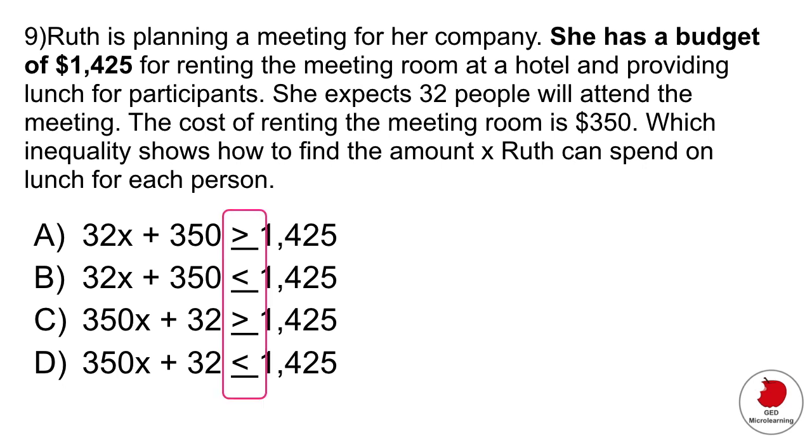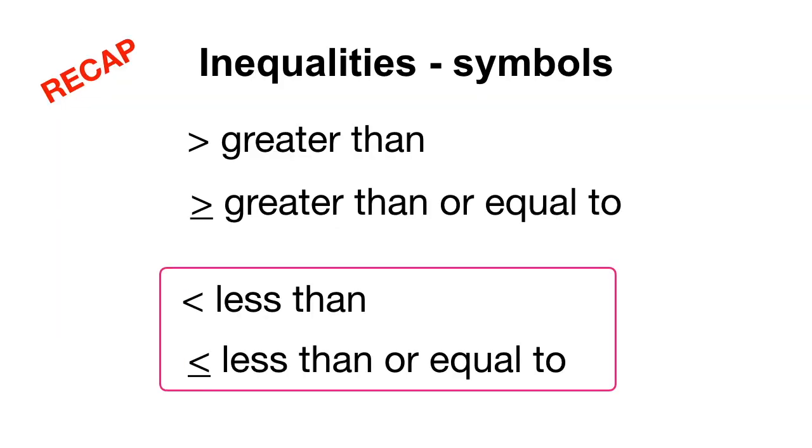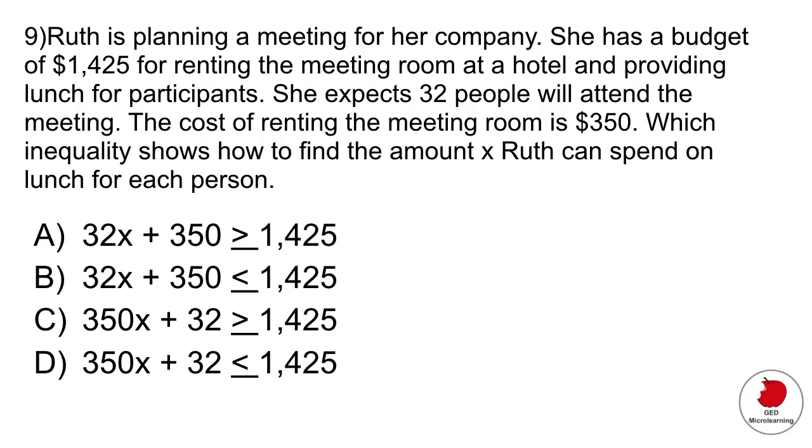As always, I recommend that you have a quick look at your answers before tackling the problem, because sometimes you can eliminate things straight away. If you look here, we have these inequality symbols. Let's remind ourselves what these mean. We said she has a budget, so she can spend less than her budget or less than or equal to her budget. These are the symbols that we want to see in our answer—less than or less than or equal to. If we go back to our question, if you look at A and C, you can see that it says more than or equal in both cases, so we can immediately eliminate these two options. The budget is $1,425. She cannot spend more.